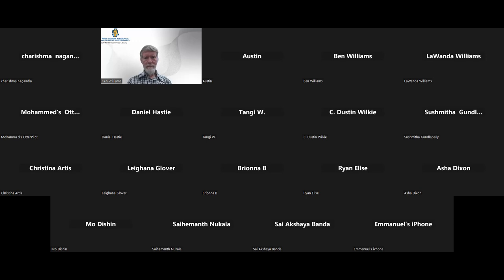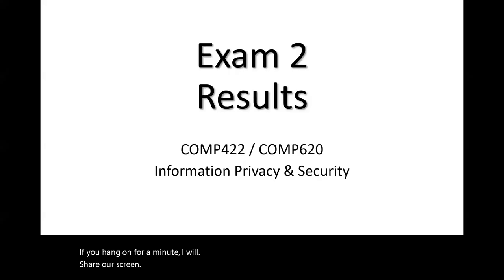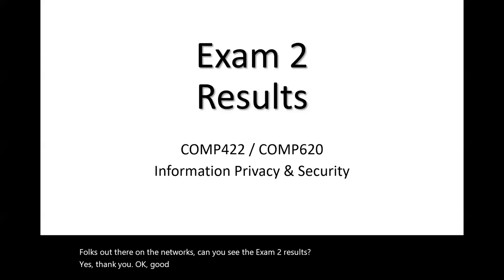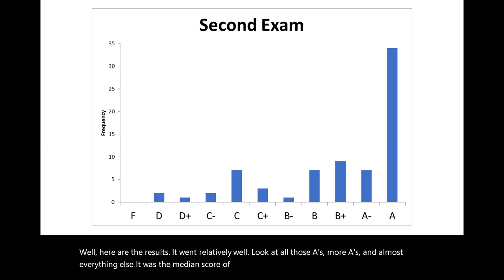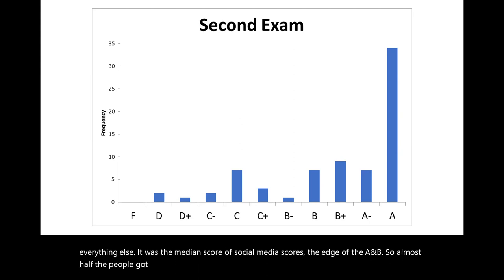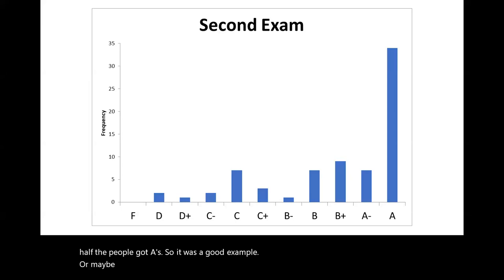Any questions about phishing? Let's take a look at the exam results. The exam went relatively well — look at all those A's, more A's than almost everything else. The median score is right at the edge of A's and B's, so almost half the people got A's. It was a good exam — or maybe it was just too easy.